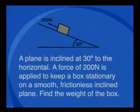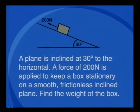In the task from our previous lesson we considered a body being held stationary on a smooth inclined plane. Here is the problem again. A plane is inclined at 30 degrees to the horizontal. A force of 200 N is applied to keep a box stationary on the smooth inclined plane. Find the weight of the box.